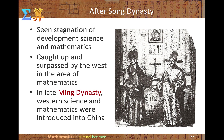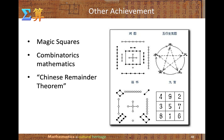It seems that in the purest dynasty there are some achievements made by the ancient Chinese mathematicians, but China was caught up and surpassed by the West in mathematics. In the late Ming dynasty, Western science and mathematics were introduced to China. Other achievements in Chinese history include magic squares, combinatorics, and the Chinese Remainder Theorem.